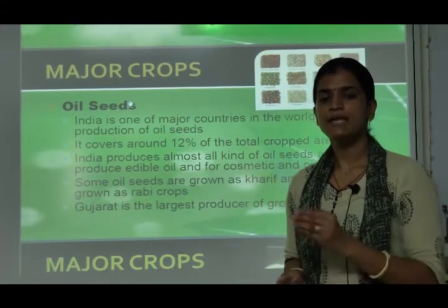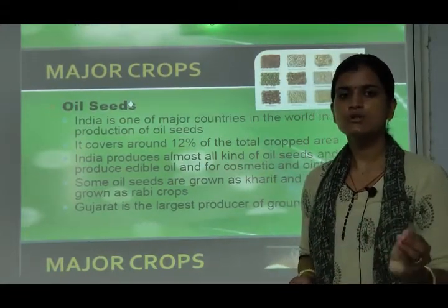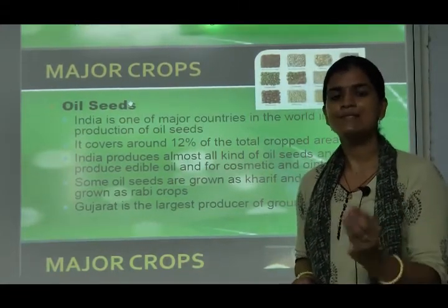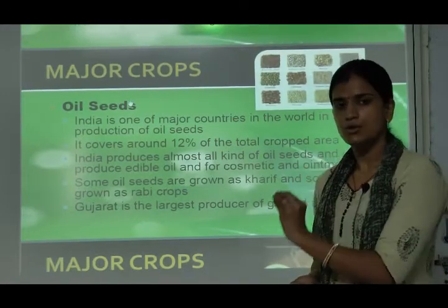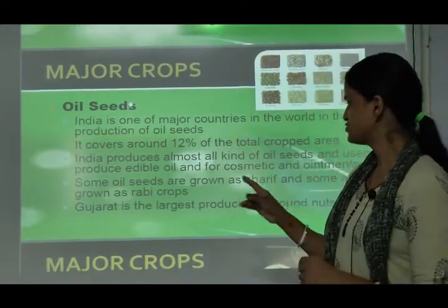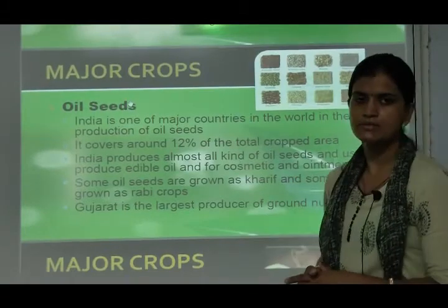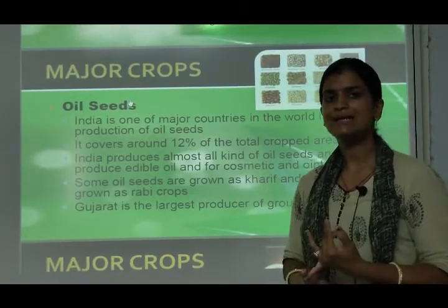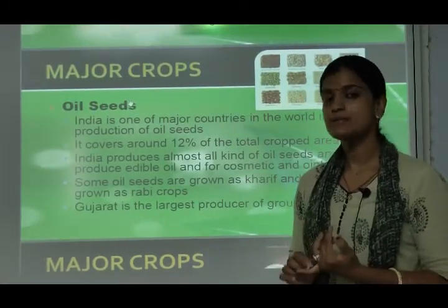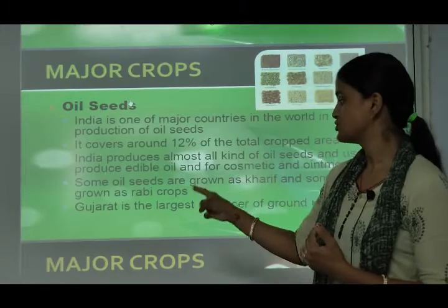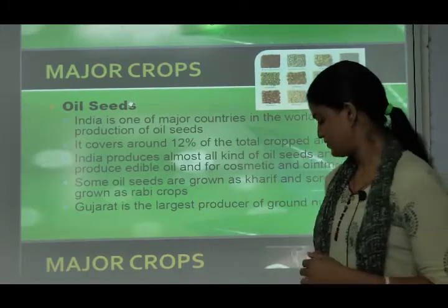Some oilseeds are grown as kharif crops and some as rabi crops, so they have different requirements of temperature and rainfall. Gujarat is the largest producer of groundnuts among the oilseeds.